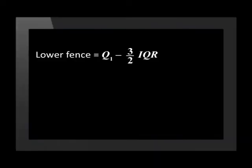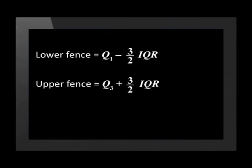We can use the formula to calculate the fence values for acceptable data. Outliers will lie outside of the fence values. The formula for the lower fence is equal to the lower quartile minus 3 over 2 times the interquartile range. The upper fence is equal to the upper quartile plus 3 over 2 times the interquartile range. Remember that we find the interquartile range by subtracting the lower quartile from the higher quartile.